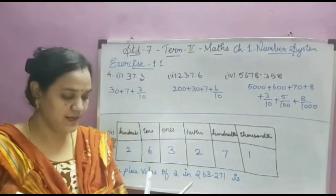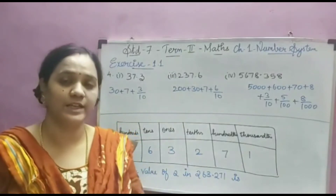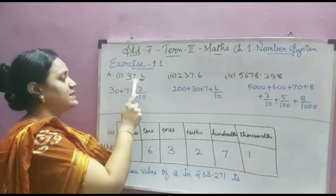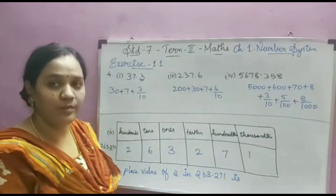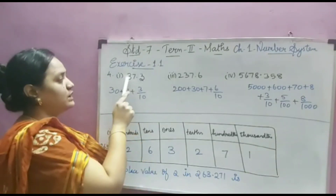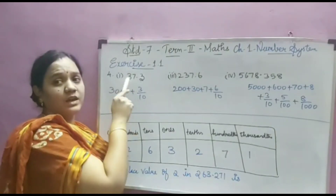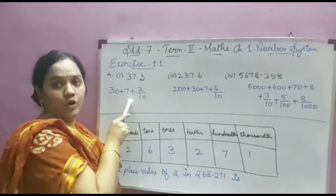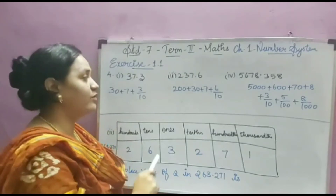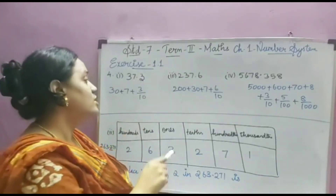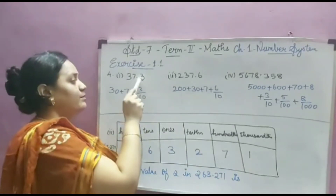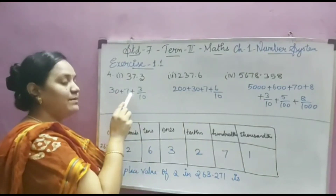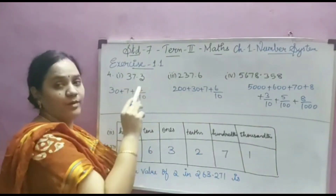Fourth problem: expand the following decimal numbers. You know how to expand whole numbers — we do the same for decimal numbers. For 37.3: the whole number part 37 expands as 30 plus 7. The decimal part: we write 3/10. So the expanded form of 37.3 is 30 + 7 + 3/10.